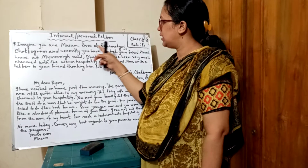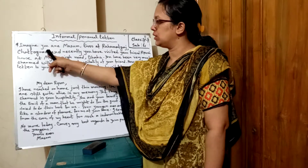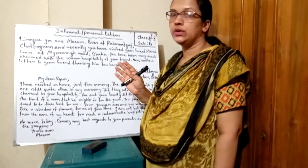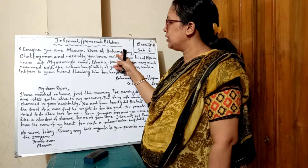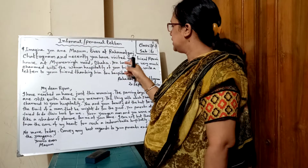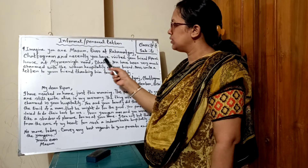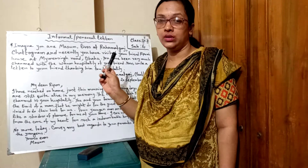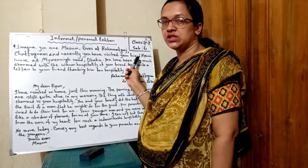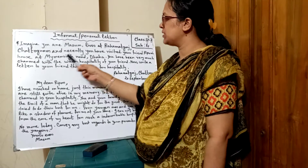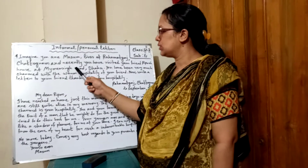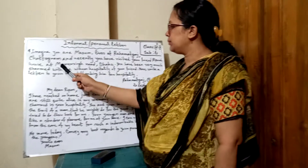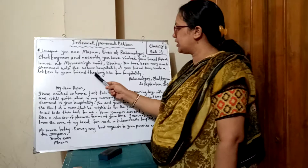In the topic, the address is given as Ramadganj and Chattagram. So you cannot use any address of your own. You have to use the address that is given in the topic: Ramadganj and Chattagram. And recently you have visited your friend Rippon's house at Maimansingh Road. So the name of your friend used in the topic is Rippon. You must use that name. His address is Maimansingh Road, Dhaka. You have been very much charmed with the warm hospitality of your friend. Now write a letter thanking him for hospitality.